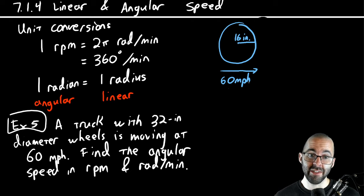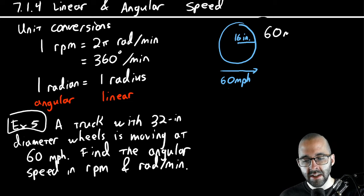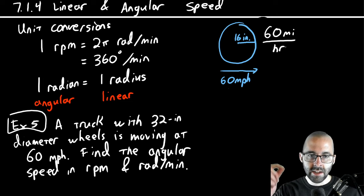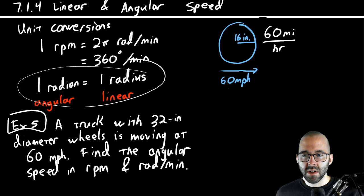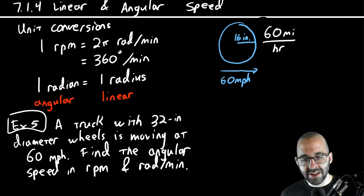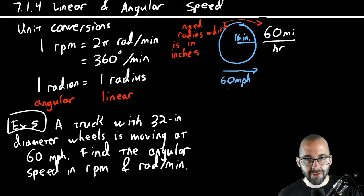We're going to do a lot of unit conversions because miles per hour and inches are really far apart. We start with what we have: 60 miles per hour — miles on top, hours on the bottom. To convert angular to linear we need the radius, and our radius is in inches, so we need to get everything into inches. We have a long way to go.